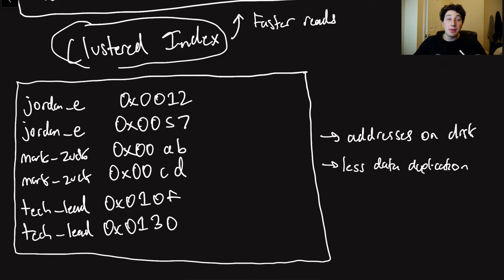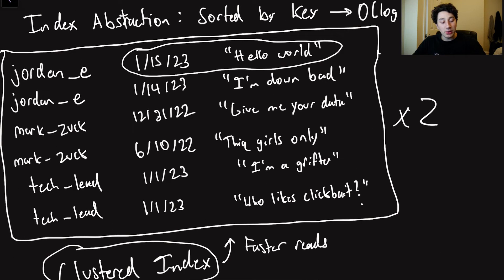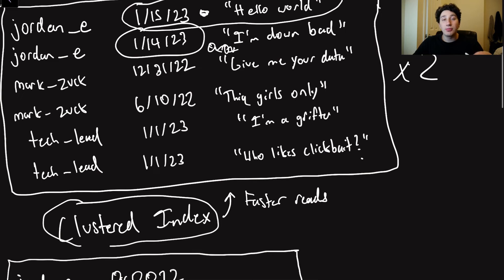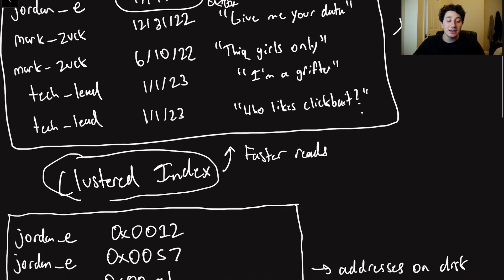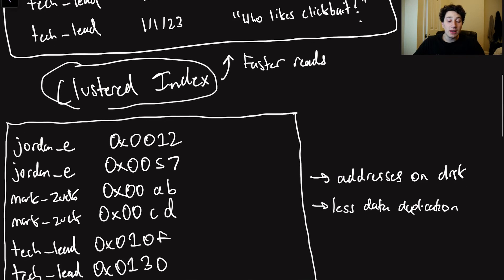There is also a middle ground known as kind of like a covered index, where as opposed to storing all of the fields like you see right here, maybe we would only store one important field and then the other one is elsewhere on disk or we would have an address on disk, whatever. But the general point is we would only have a subset of fields in the index and that kind of provides that trade-off where you're storing less data but you still have faster reads for the fields that we want in the index.